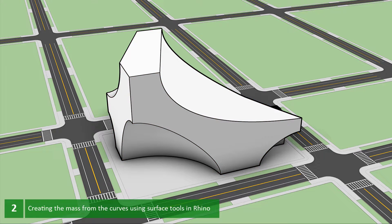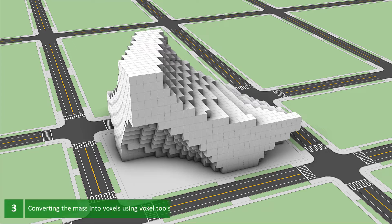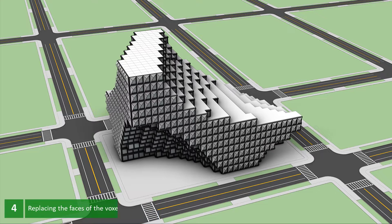Step 2, we use these curves to generate a solid mass using the surface tools. Step 3, we convert this mass into a voxel structure. Step 4, we create blocks with the same size as the faces of the voxel structure, then use the Elefront plugin to orient these blocks through the exterior faces of the structure.